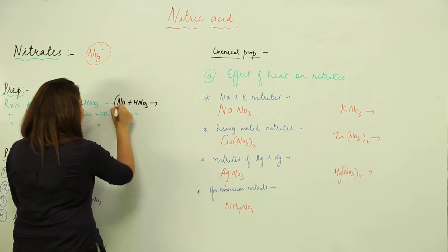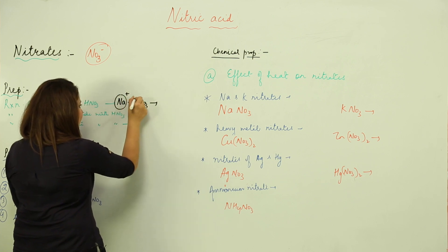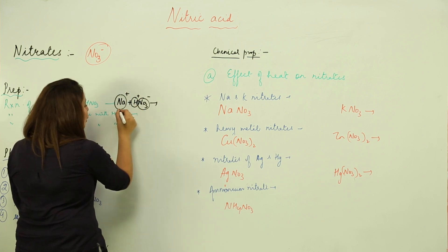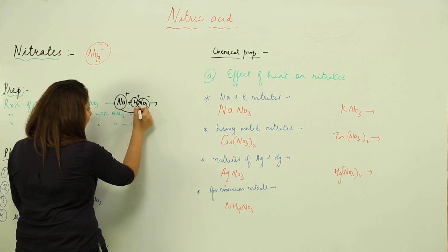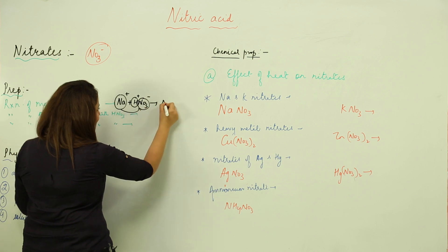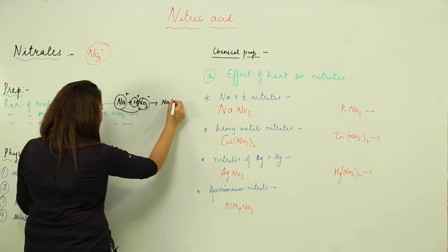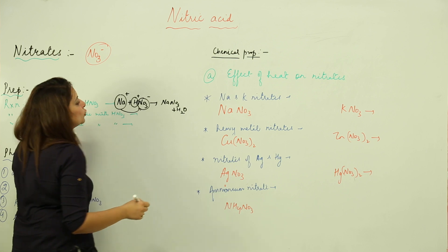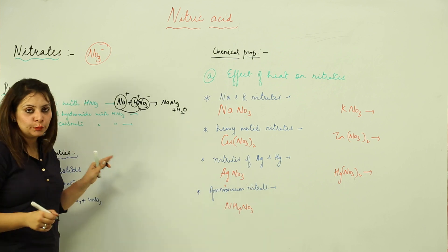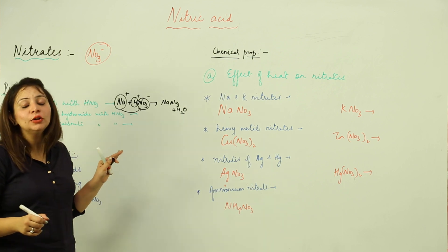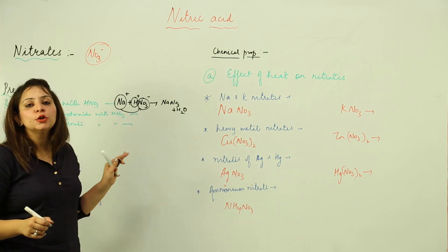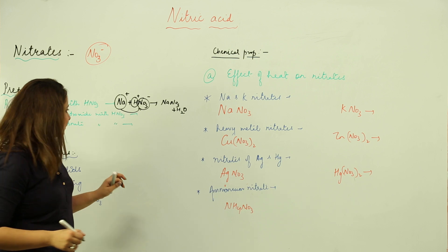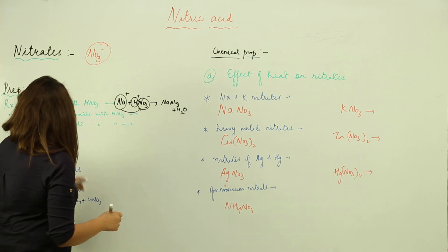The sodium has a positive valency and the positive part attacks the nitrate, so we get NaNO3 plus H2O — not H2, but H2O — because HNO3 is a strong oxidizing agent.